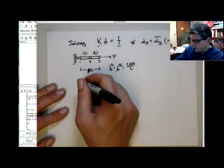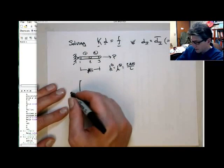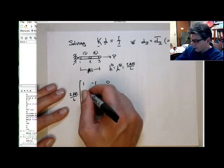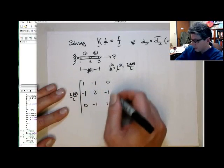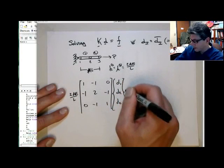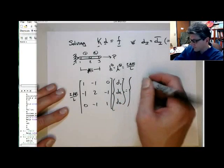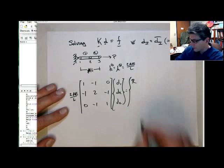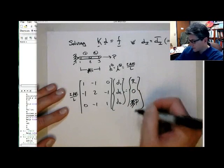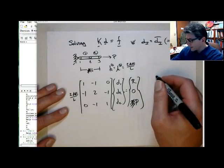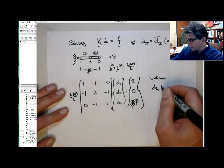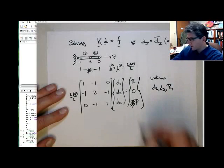So this gives us the following system of equations: 2AE over L times the matrix [1, -1, 0; -1, 2, -1; 0, -1, 1] times [D1; D2; D3] equals [R1, 0, P], where R1 is the reaction force at node 1 which is unknown. So in this case, the unknowns are D2, D3, and R1, the reaction force at node 1.